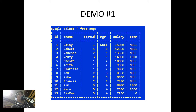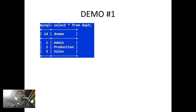Let's look at the contents of the M table. If we issue SELECT * FROM M, it will display the records of the M table, showing column numbers one, two, three with their values. For the depth table, SELECT * FROM depth shows three rows: one for admin, two for production, and three for sales.